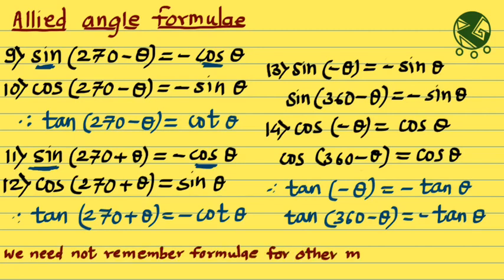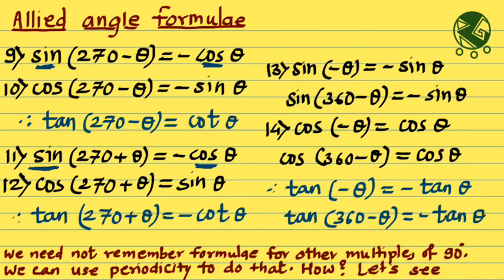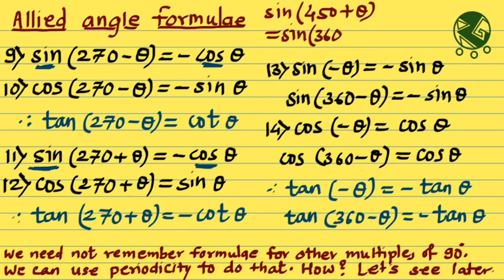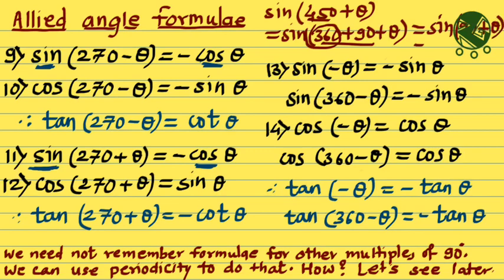For higher multiples like sine of 450 plus theta, we use periodicity combined with allied angle formulas. Since 450 equals 360 plus 90, by periodicity sine of 450 plus theta equals sine of 90 plus theta, and sine of 90 plus theta equals cos theta. So sine of 450 plus theta equals cos theta.